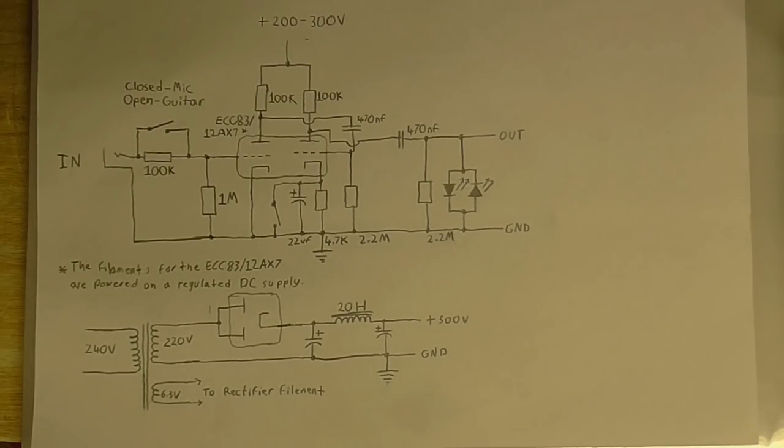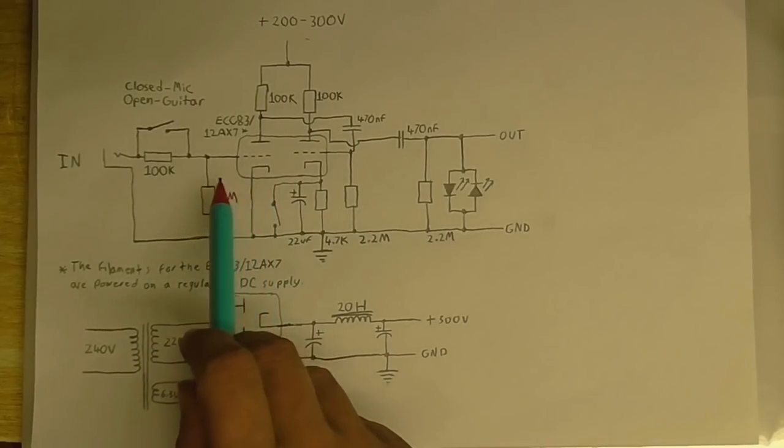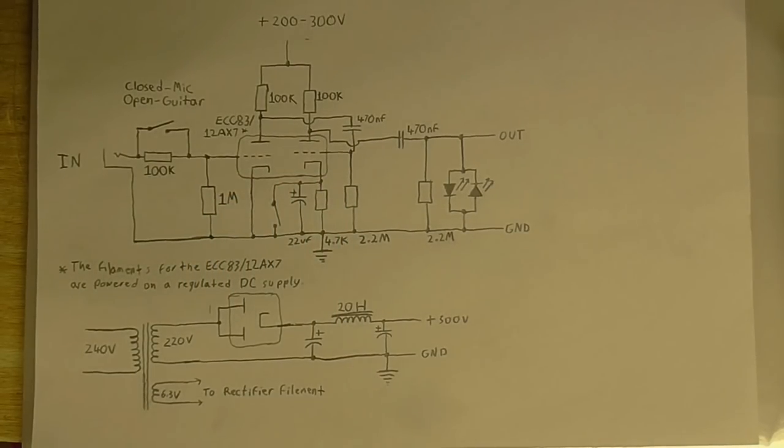So you might have noticed that I've put a switch here which says closed mic and open guitar. So when the switch is open, the signal goes first through this 100k resistor, which I might actually bump up to 220k. I might even make that one mega ohm. I haven't really decided yet, but 100k for now. And that goes into our tube, which is a two-stage amplifier. And when the switch is closed, this resistor is shorted out, so the microphone just connects straight to the tube's grid.